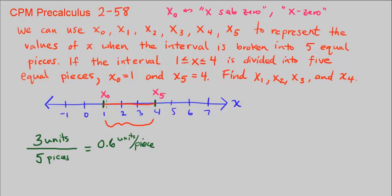So along here, the first point is going to be 0.6 from the start — the distance between x sub 0 and x sub 1 is 0.6. We're going to call that x sub 1. We add another 0.6 and that's going to be x sub 2. That's another 0.6. And x sub 3 is going to be right here. x sub 4 is right here as well. Each increment is adding 0.6.